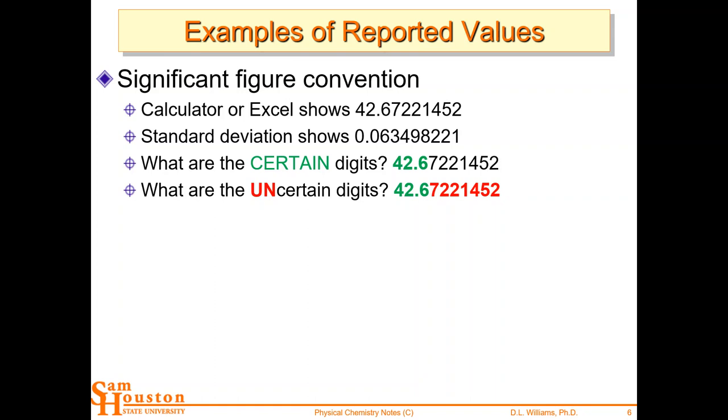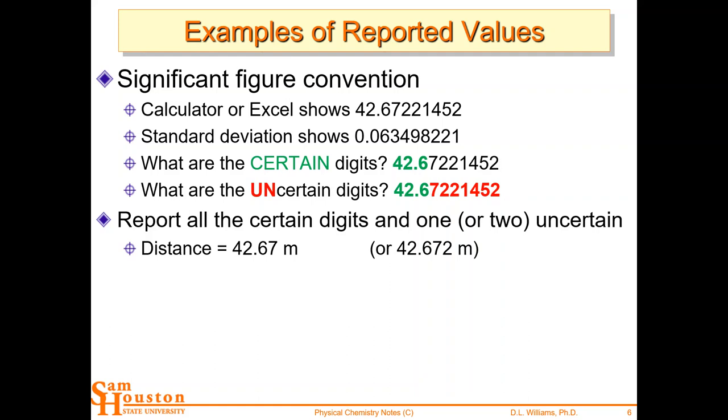So this should lock it down for you now. You look at your value and you look at the uncertainty and the uncertainty tells you where uncertainty begins. And that's how you know where to round. Okay. Because where do you round those numbers? You round them with one or two uncertain digits. And so you would report either this, that the distance is 42.67 meters or 42.672. And your standard deviation, if you were reporting it with that, you would put 0.06 with the first value, or if you were going to keep two uncertain digits, you would report 0.063 with that value. Notice what has to happen is these two have to match.